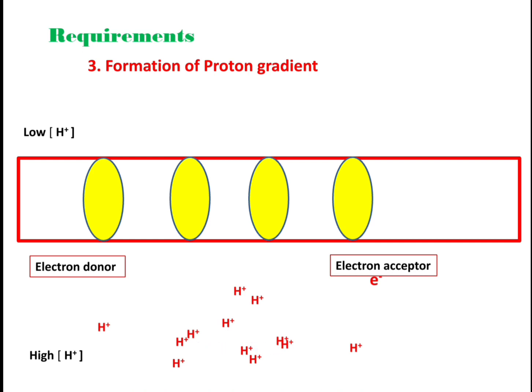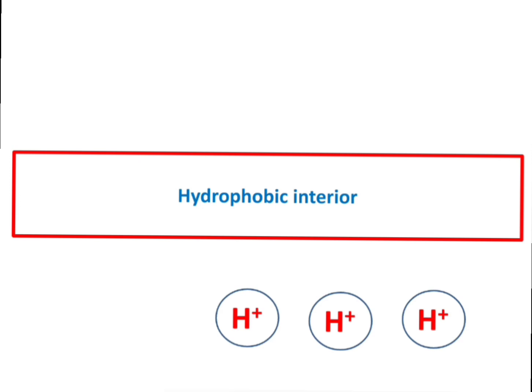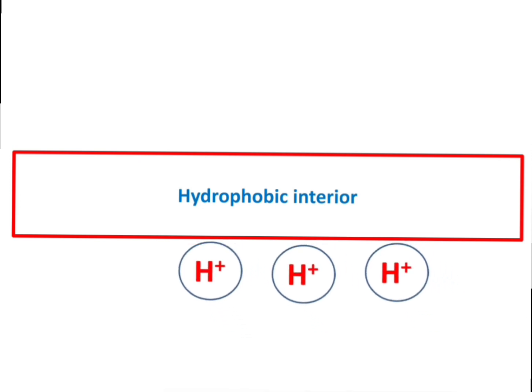This potential energy can be used to synthesize ATP molecules. Since all chemical species have a tendency to move from the region of higher concentration to the region of lower concentration, protons also want to move this way, but they cannot cross this membrane because the interior of membrane is hydrophobic.